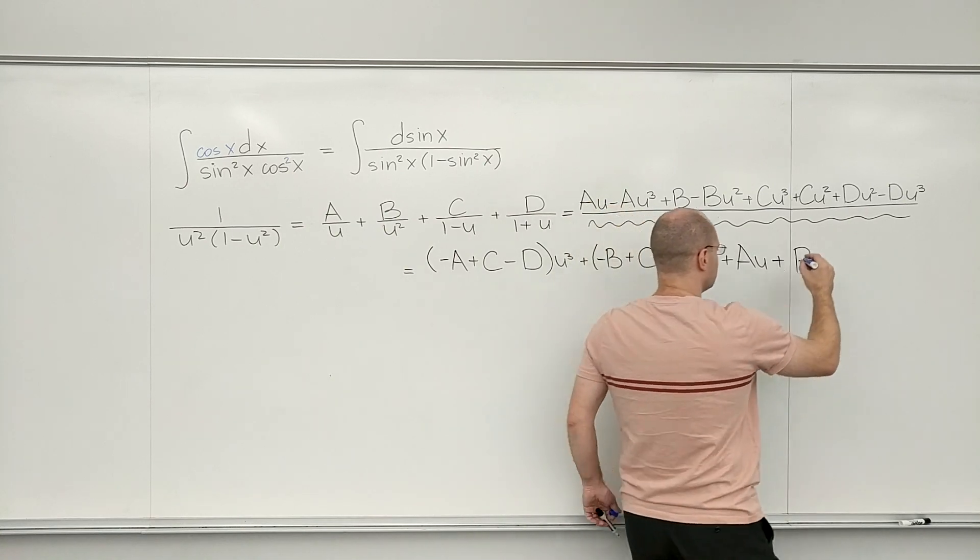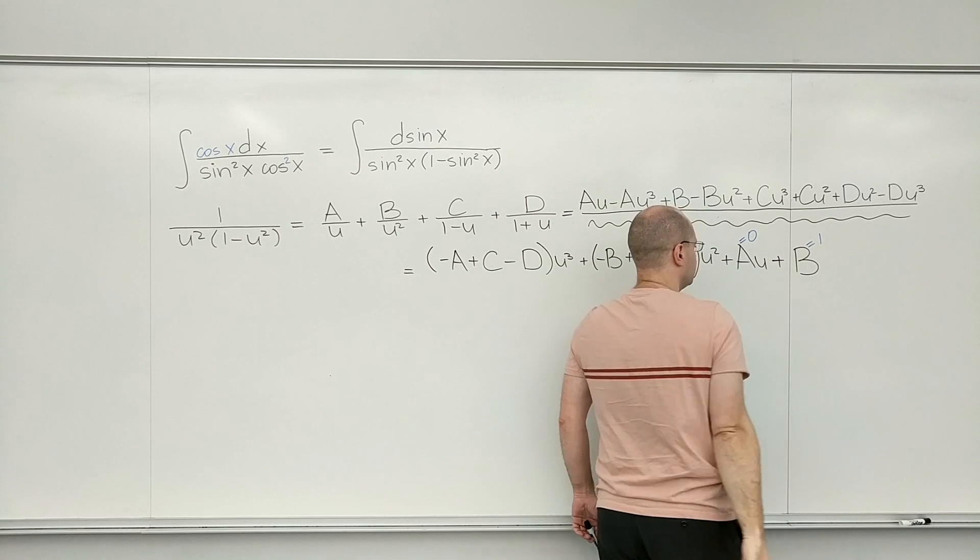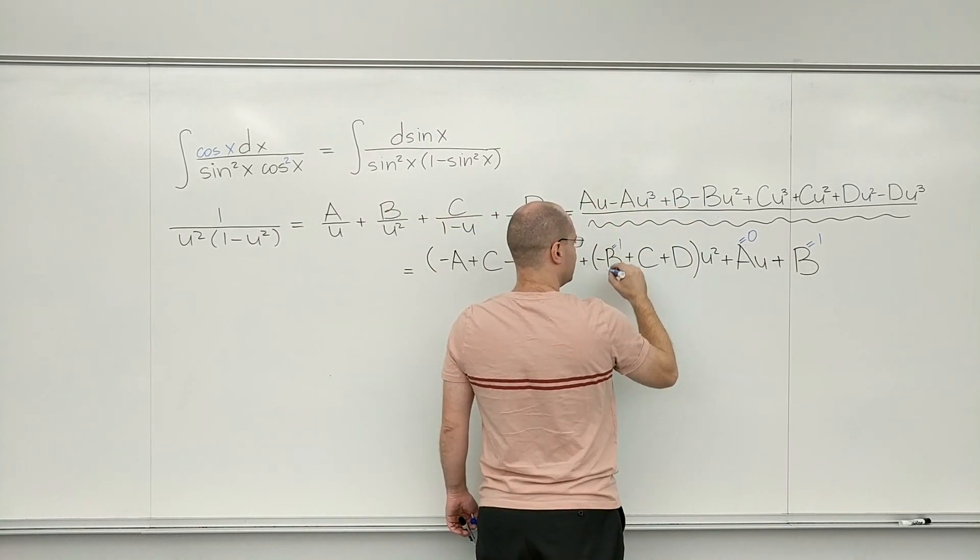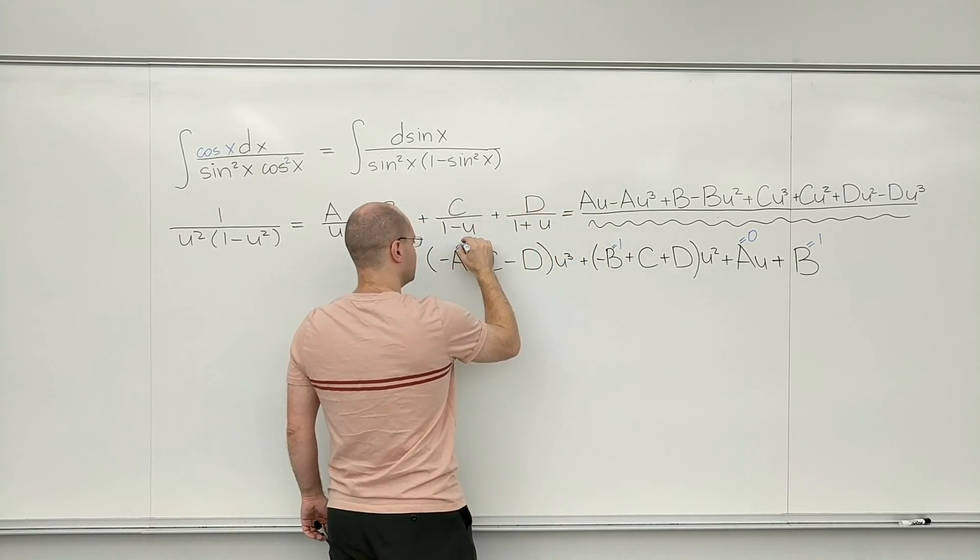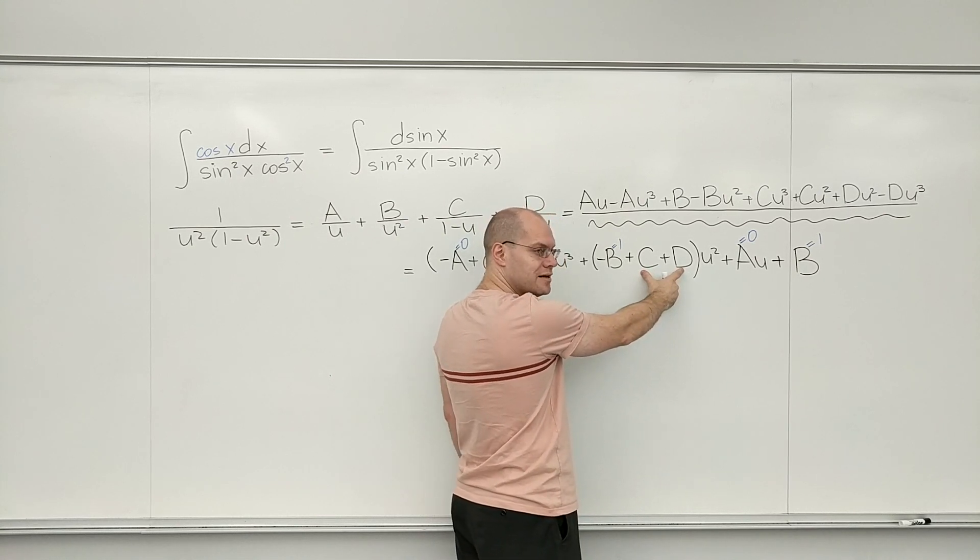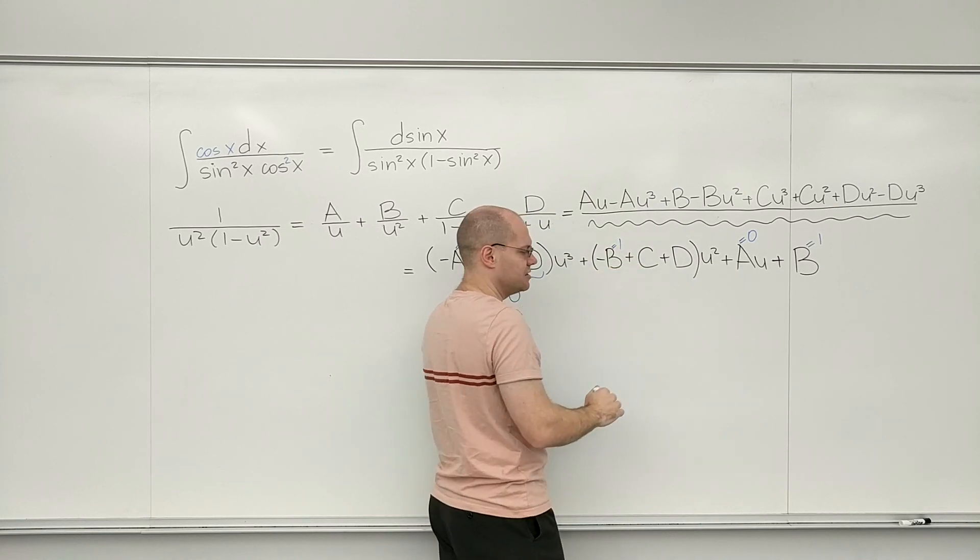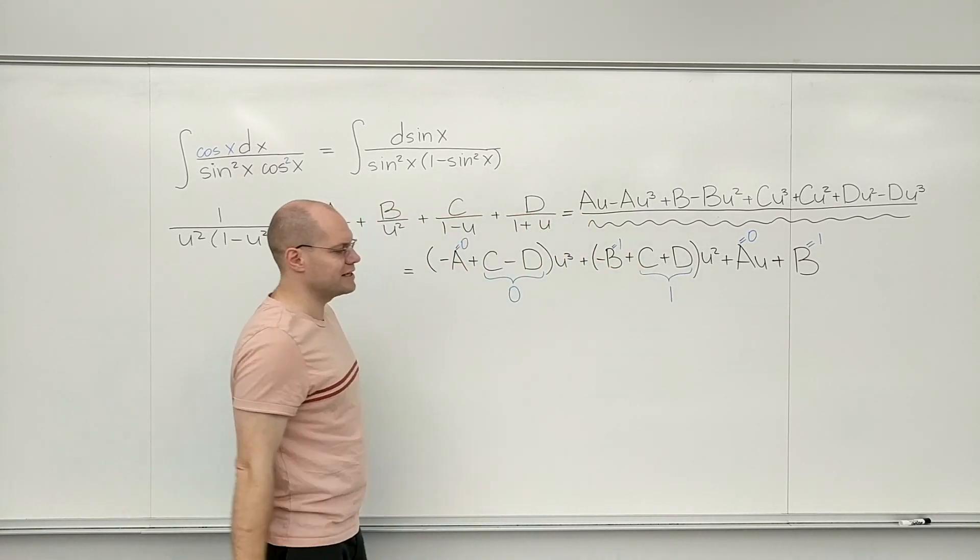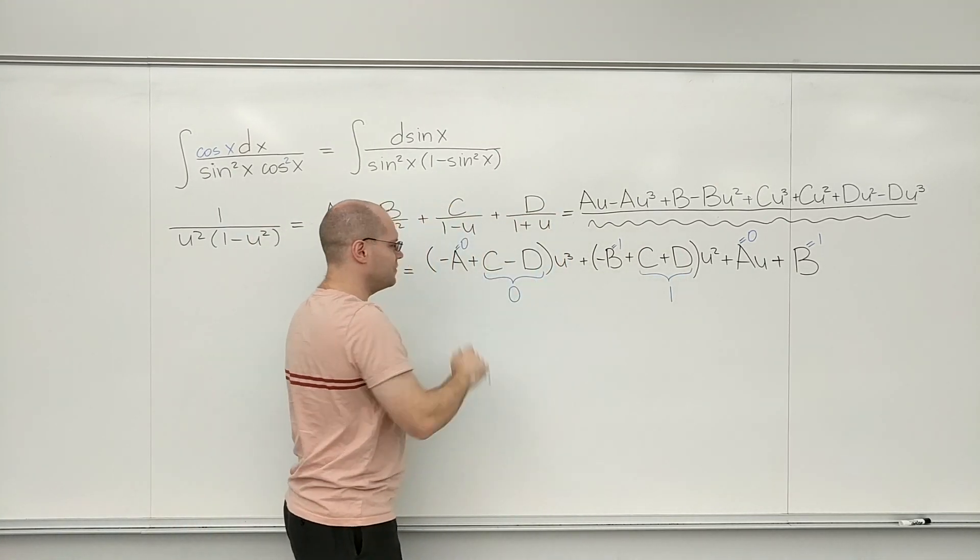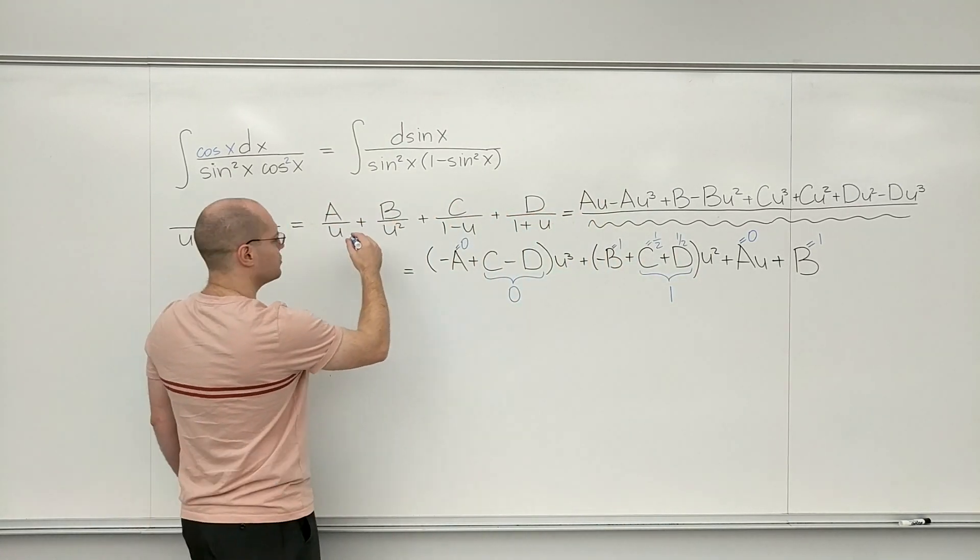A equals 0, because there is no U. So this equals 1, and this equals 0. And C plus D must equal 1, so that when you subtract 1 from it, you get 0. So both are 1 half. 1 half plus 1 half equals 1. 1 half minus 1 half equals 0. Perfect. So I'm just going to write it in here. So this is gone, because it's 0.